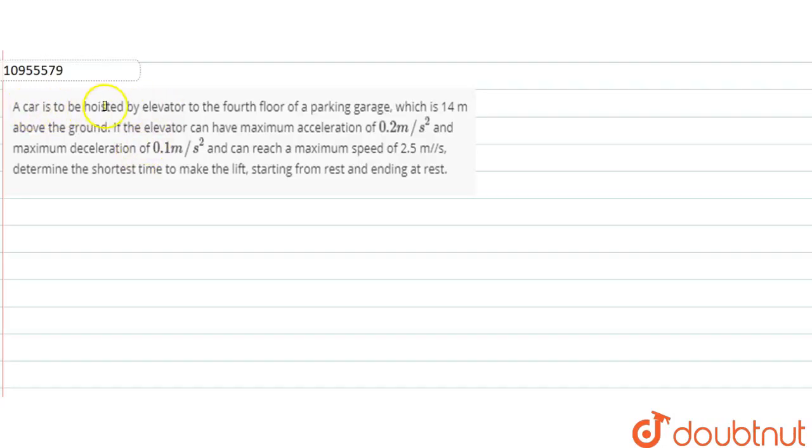So the question is given. A car is to be hoisted by an elevator to the 4th floor of a parking garage which is 14 meters above the ground. So the total distance which goes above is 14 meters.